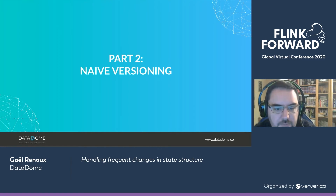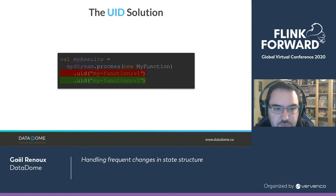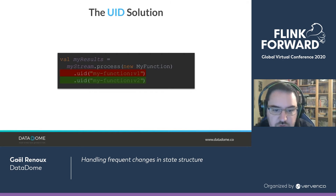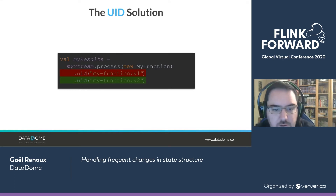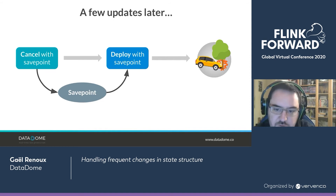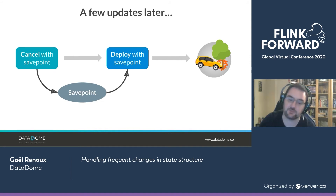So what was our first solution? It was pretty obvious: we know state is kept by UID of the operator, so we're just going to version our UIDs. We started doing that, and it was great. But a few updates later, we deployed with a savepoint and the job crashed yet again.